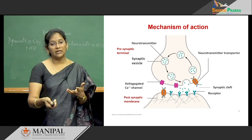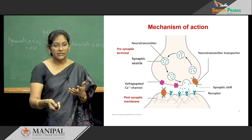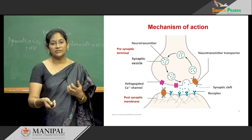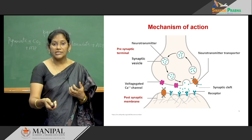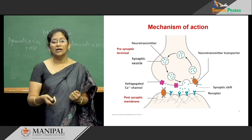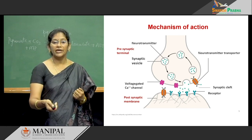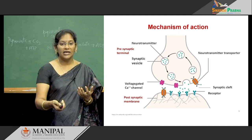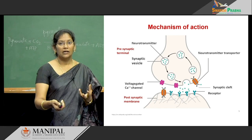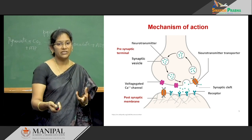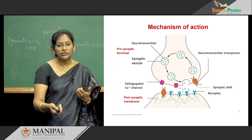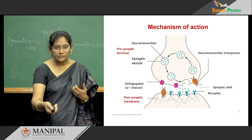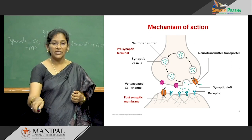How these are released into the synaptic cleft: the voltage-gated calcium channels play an important role in the release of the neurotransmitters from the synaptic cleft. Whenever the action potential reaches the presynaptic terminal, these voltage-gated calcium channels will be opened. Once opened, there will be more influx of calcium into the presynaptic terminal, which mainly favors the fusion of the synaptic vesicle with the cell membrane. By the exocytosis process, these neurotransmitters are released into the synaptic cleft.